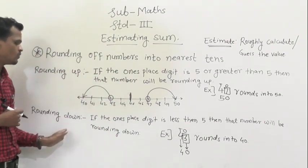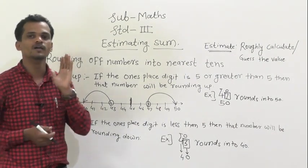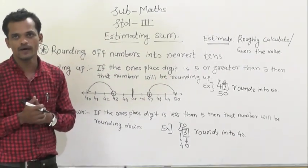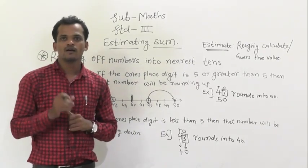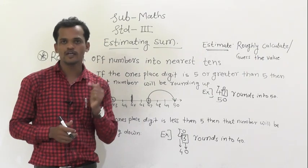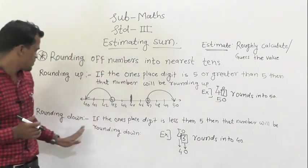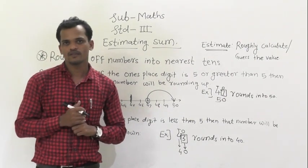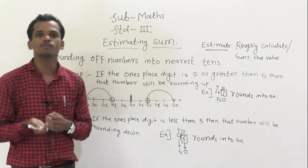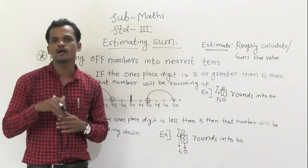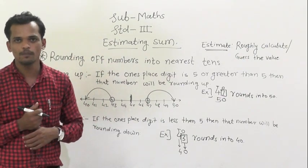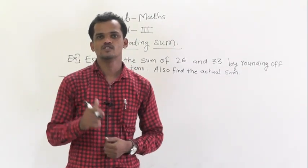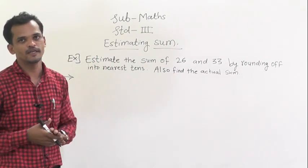To recap: rounding up — if the one's place digit is 5 or greater than 5, round up by writing 0 at the one's place and adding 1 to the ten's place digit. Rounding down — if the one's place digit is less than 5, round down by writing 0 at the one's place and keeping the ten's place digit as it is.